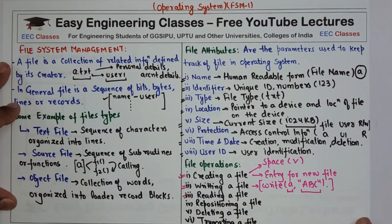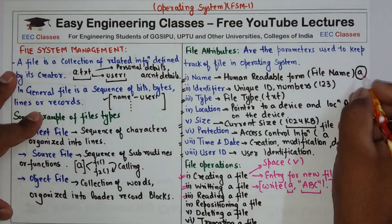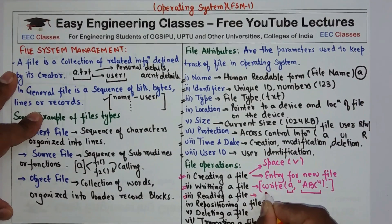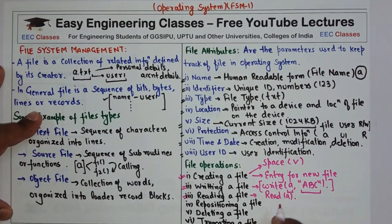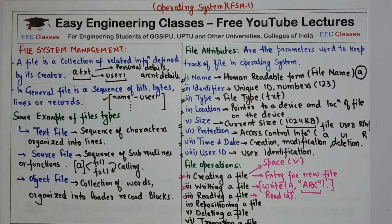To read a file, a system call specifies the file name and where the next block of the file should be placed in memory. For example, a call like: read(a) — this reads file 'a' and you also specify the pointer to the location of the next block of file 'a' that needs to be loaded.